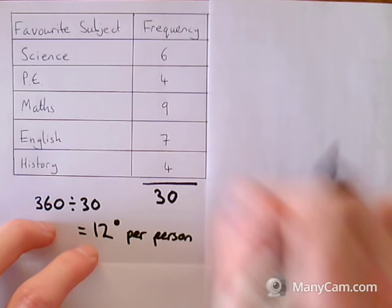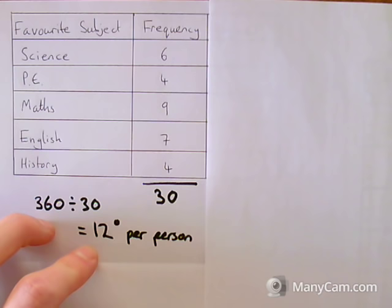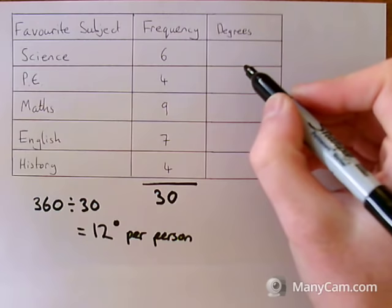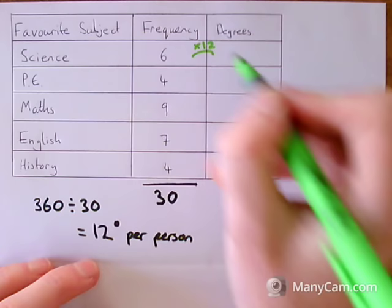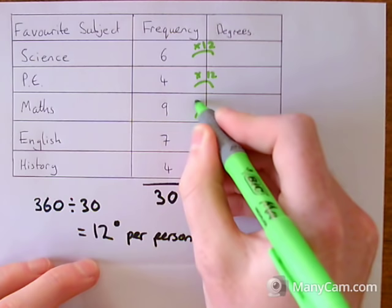Sometimes in exam questions they'll give you an extra column next to your frequency table to draw your degrees. Sometimes you'll have to draw it in yourself. We're going to end up filling out this degrees column. Now because I said it's 12 degrees per person, if there's 6 people I need to times 6 by 12 to get my degrees here. I also need to times 4 by 12. I need to times 9 by 12. So I'm multiplying everything.